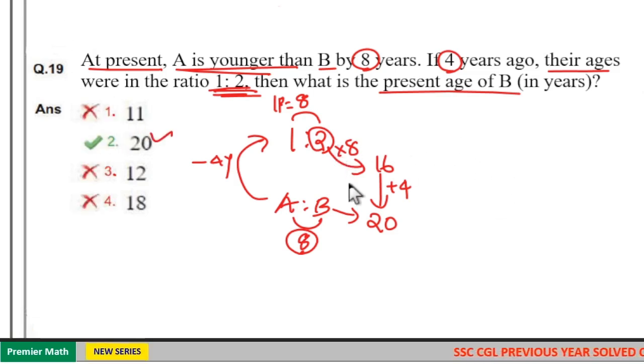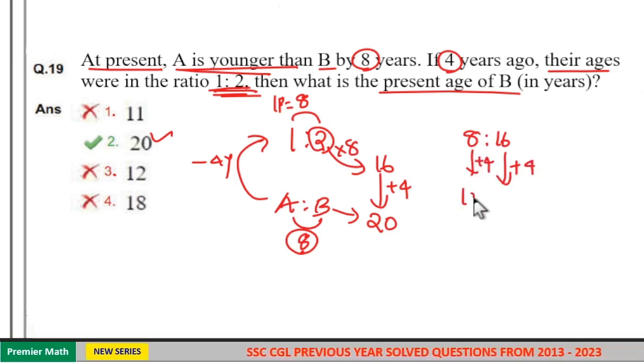That is, 4 years ago A's age was 1 into 8, which is 8, and B's age was 2 into 8, which is 16. Now after 4 years, that is presently, A's age is 8 plus 4, which is 12, and B's age is 16 plus 4, which is 20.